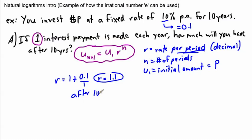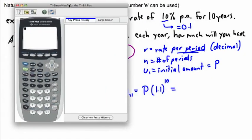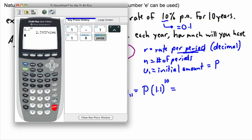After 10 years, U11 — the amount after 10 years — equals P times 1.1 to the power of N. Here N is 1 payment per year times 10 years, which is 10 periods. Let me calculate 1.1 to the power of 10 on my calculator. That gives me 2.593742... So the answer after 10 years is P times 2.5937 (continuing).